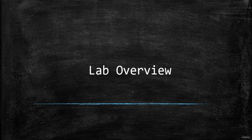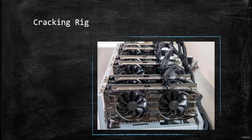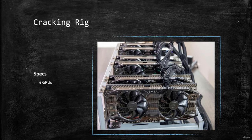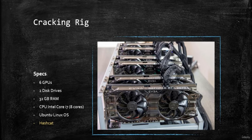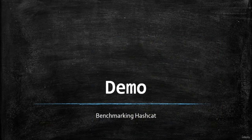Let's see the lab host I will be using for this course. It is a cracking rig that I built myself, and at the end of this course I will show you how to build a similar one. This machine has six GPU cards, two disk drives — one for the OS and one for backing up password dictionary files — 32 GB of memory, and a fast Intel eight-core CPU. The host OS will be Ubuntu Linux, and the main tool will be Hashcat.